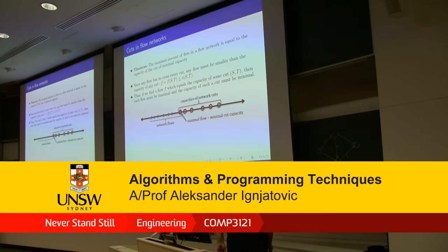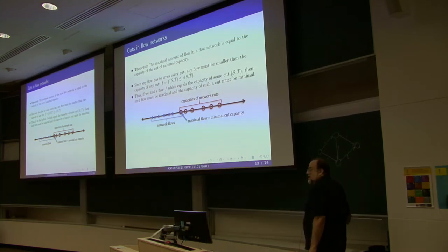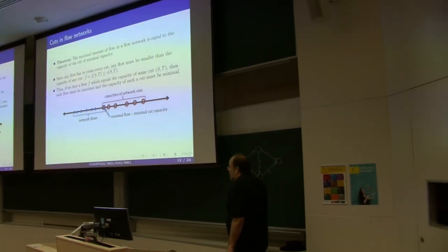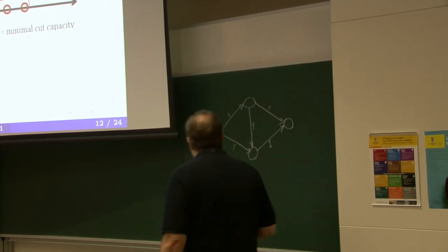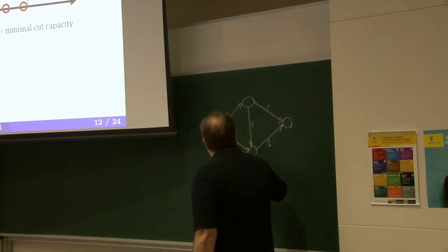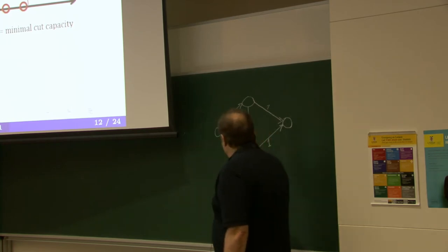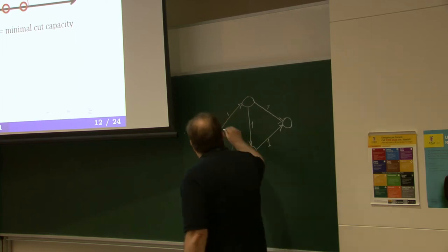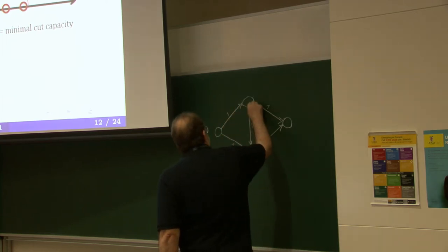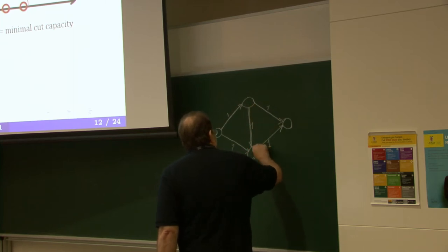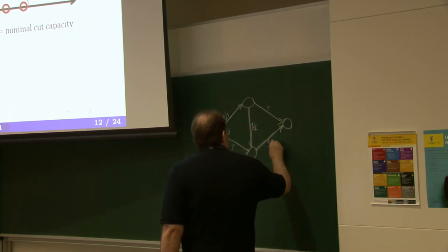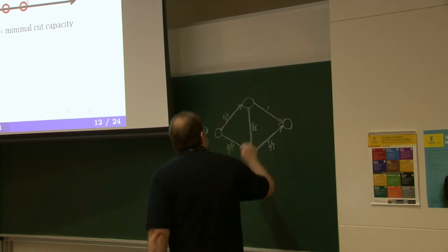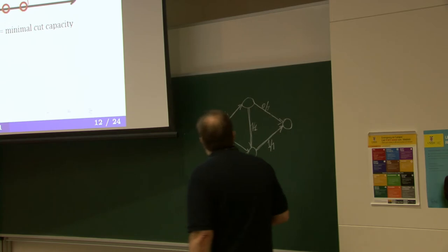Let's look again at this example of why it's important to draw residual network flow. Say we want to find max flow through this simple network. We choose this augmenting path first, so we will have 1 out of 1 this way, 1 out of 1 this way, 1 out of 1 this way, 0 out of 1 this way, and 0 out of 1 this way.